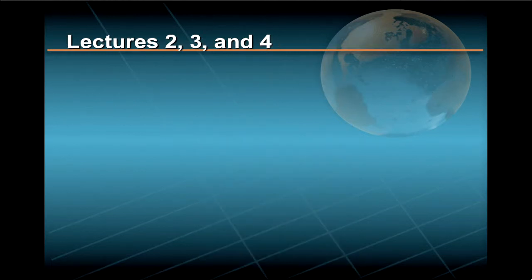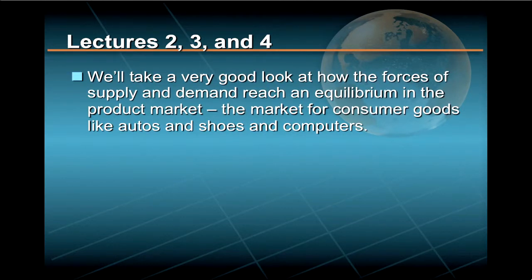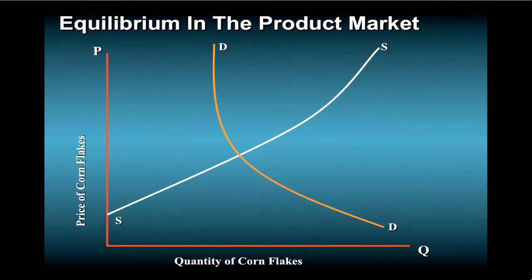In lectures two through four, we'll take a very good look at how the forces of supply and demand reach an equilibrium in the product market — the market for consumer goods like autos and shoes and computers. This figure shows just such an equilibrium. Note that the price of the good, in this case cornflakes, is on the vertical axis and the quantity of the cornflakes is on the horizontal axis.